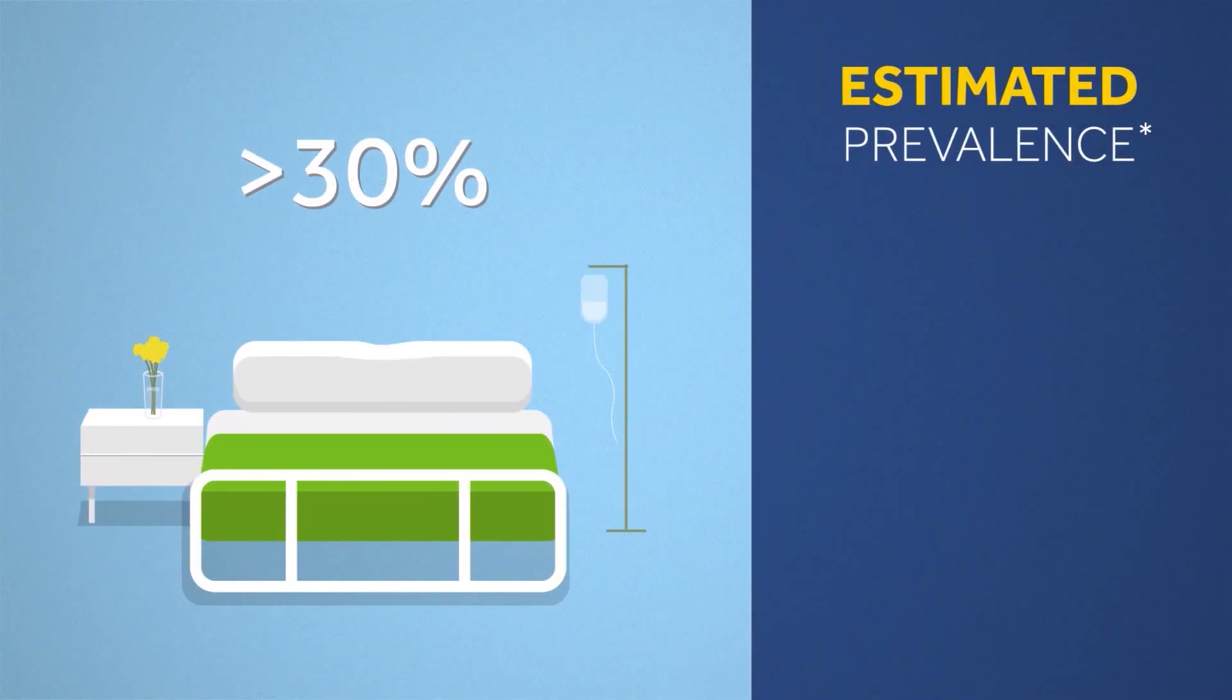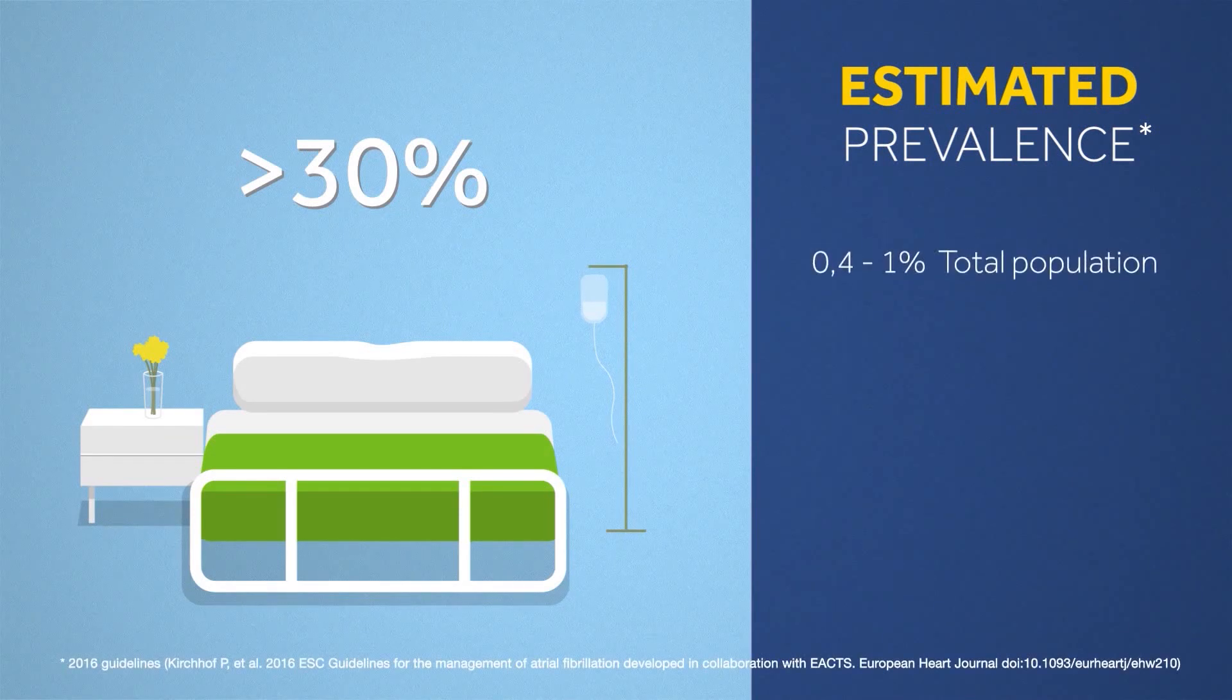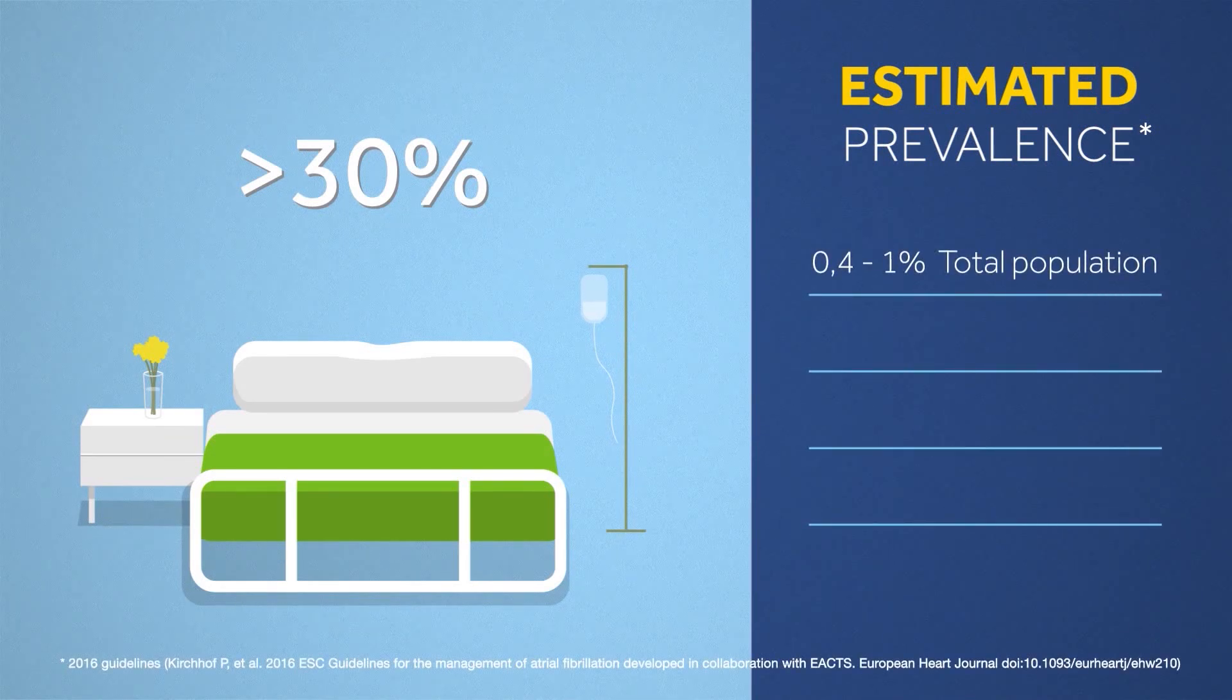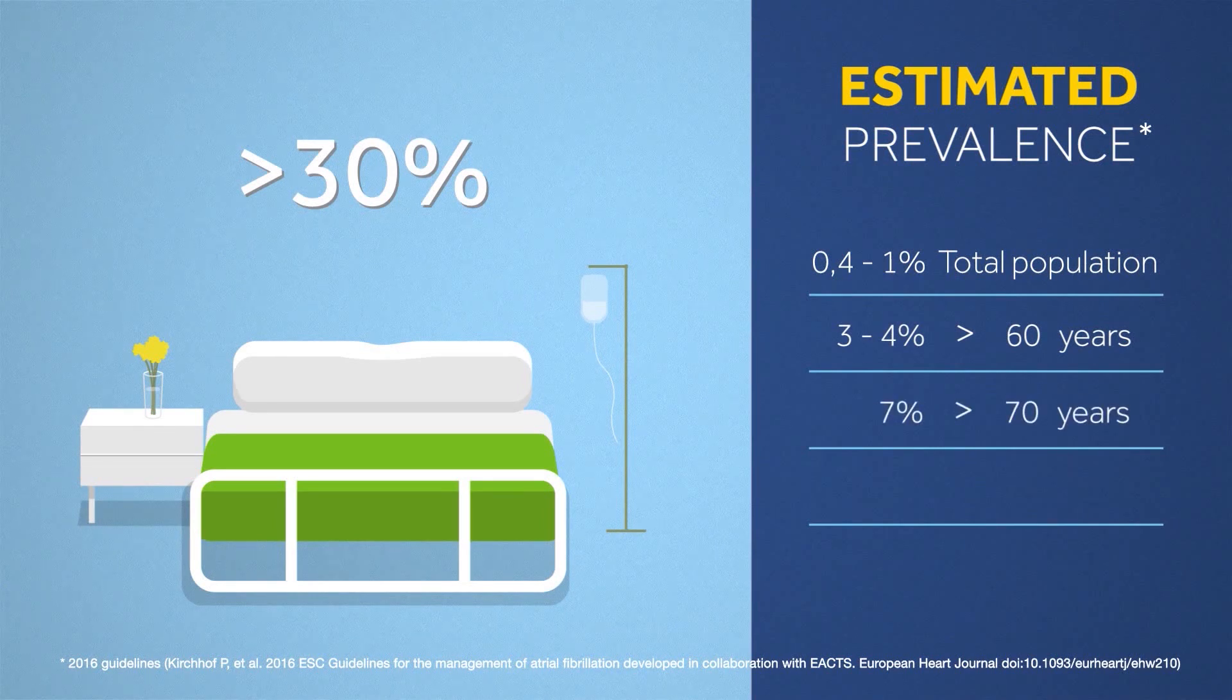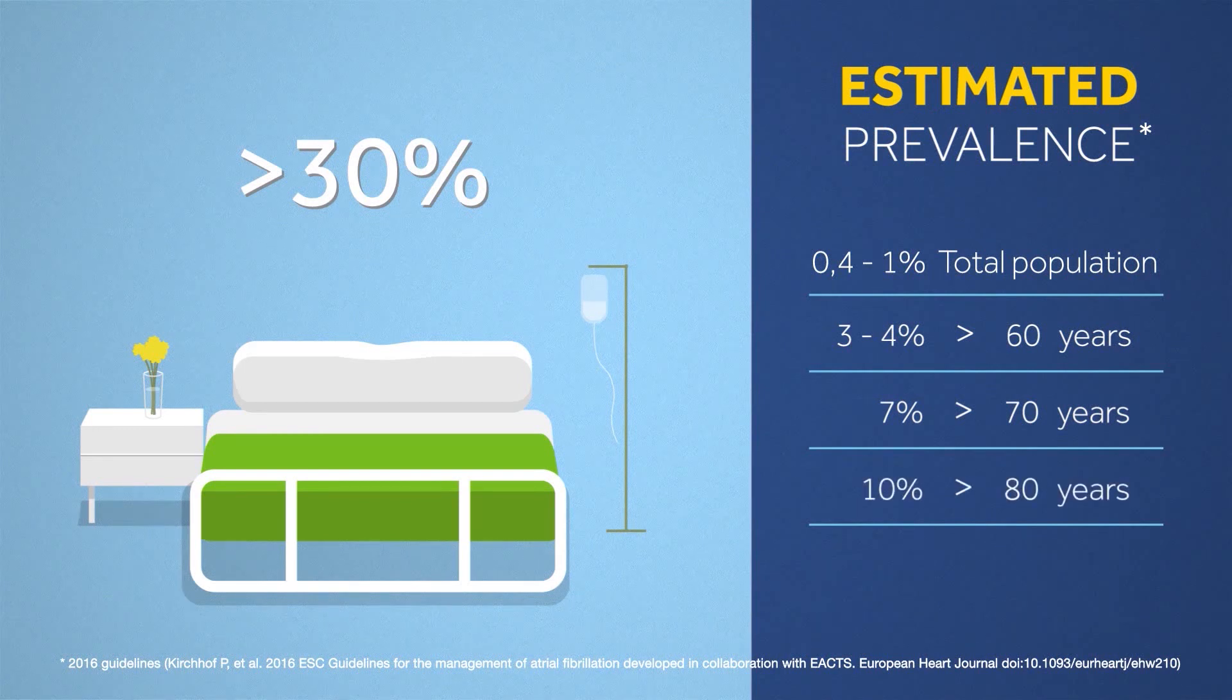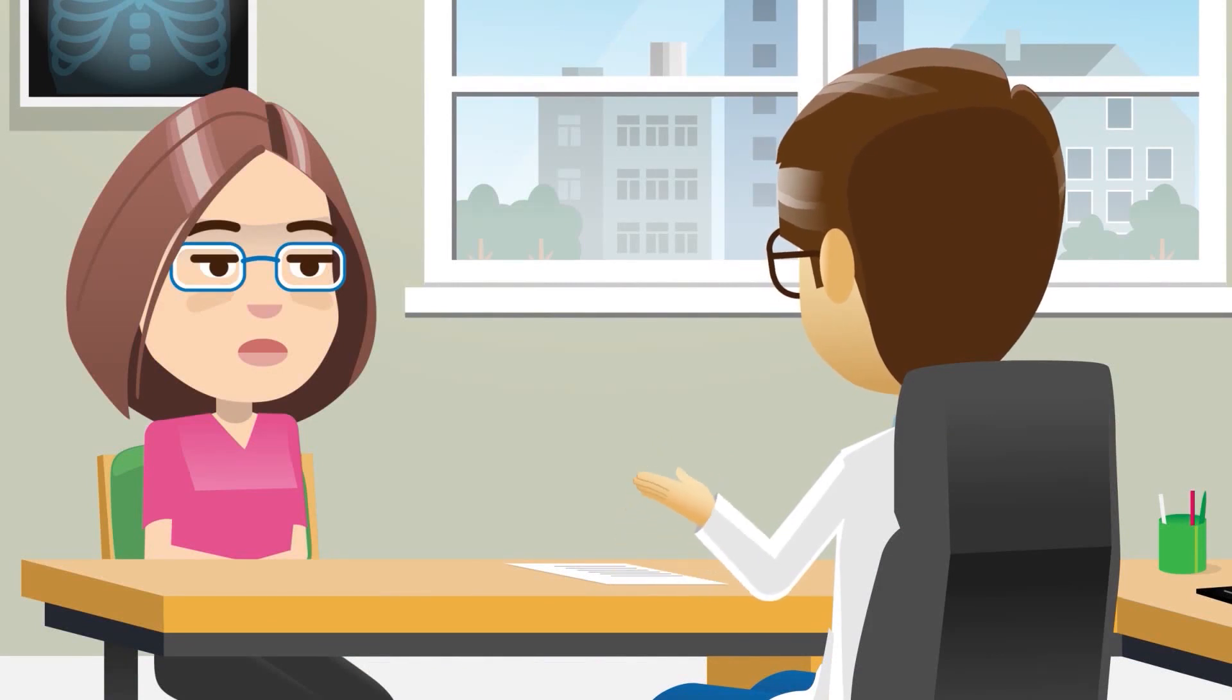The estimated population-based prevalence is 0.4 to 1% of total population, 3 to 4% older than 60 years, 7% older than 70 years, 10% older than 80 years. Lisa now understands AF. She feels more comfortable discussing her treatment options.